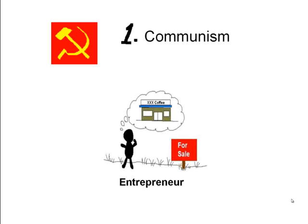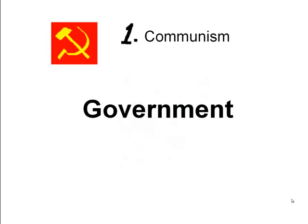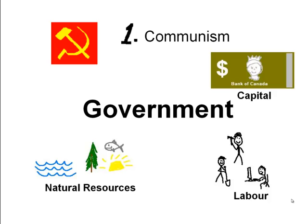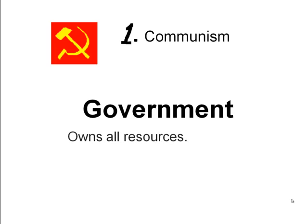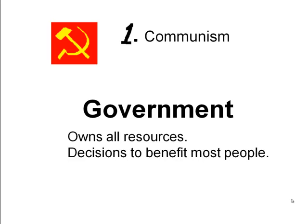How does communism work? Consider the idea of an entrepreneur coming up with an idea — in our case, opening up a coffee shop, purchasing some land, getting a business up and running. Well, in communism that wouldn't happen. Government controls all of the factors of production and makes all the decisions about which industries are going to operate. Government determines how the factors of production get utilized — who gets capital, how that capital gets used to build certain industries.